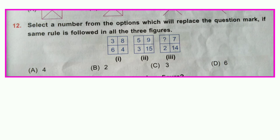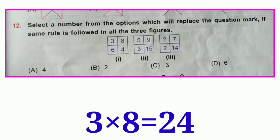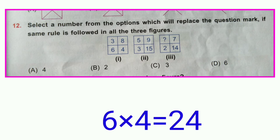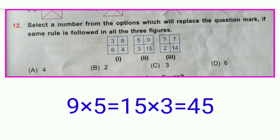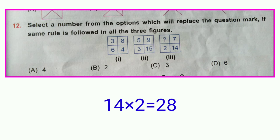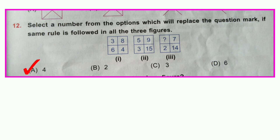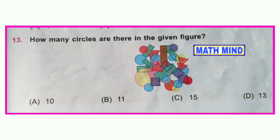Question number twelve: Select a number from the options which will replace the question mark, if the same rule is followed in all three figures. In figure one, 3 × 8 = 24 and 6 × 4 = 24 — the product of numbers in row one equals the product of numbers in row two. Figure two follows the same rule: 9 × 5 = 45 and 3 × 15 = 45. Following this pattern: 14 × 2 = 28, so we need a number whose product with 7 is 28 — that is 28 ÷ 7 = 4. Option A is correct.